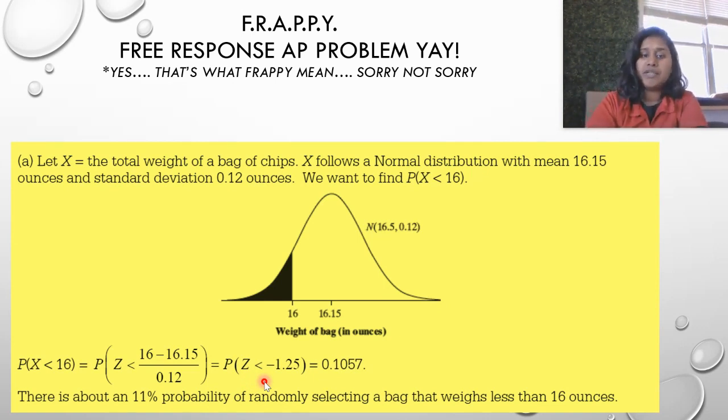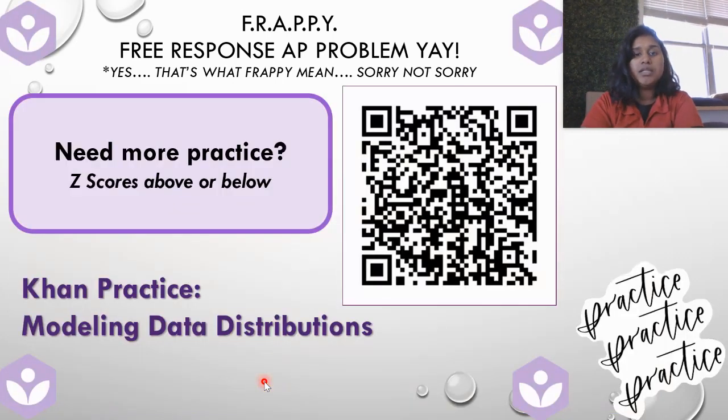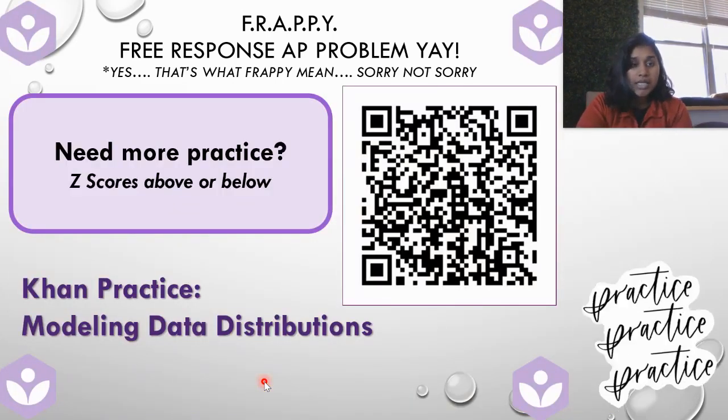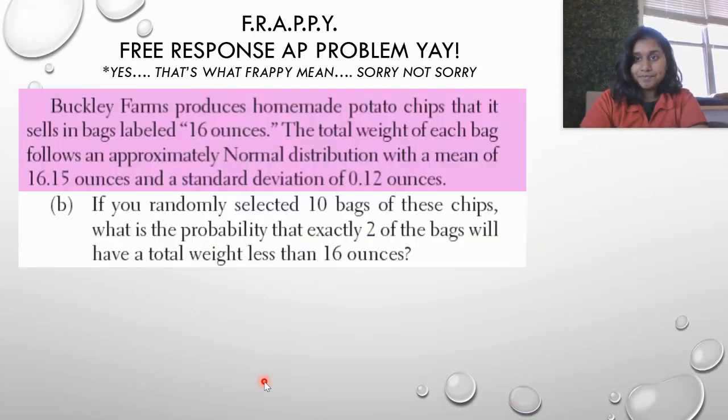If I go to my z-score table or I use an online table calculator or the TI Inspire or 84, I end up with the p-value, an area under the curve of 0.1057. There is an 11% probability of randomly selecting a bag that weighs less than 16 ounces. If you need more practice on that, you can go back to modeling data distributions and z-scores.